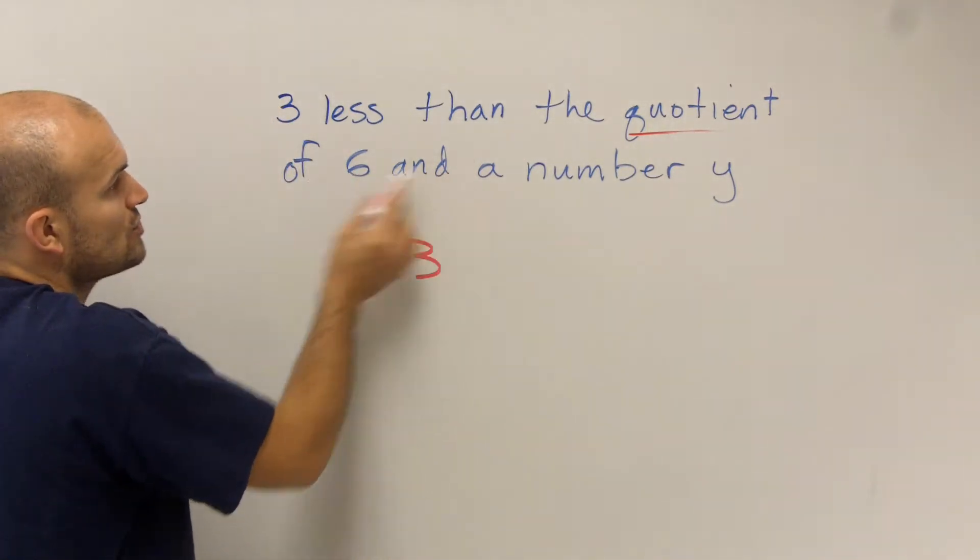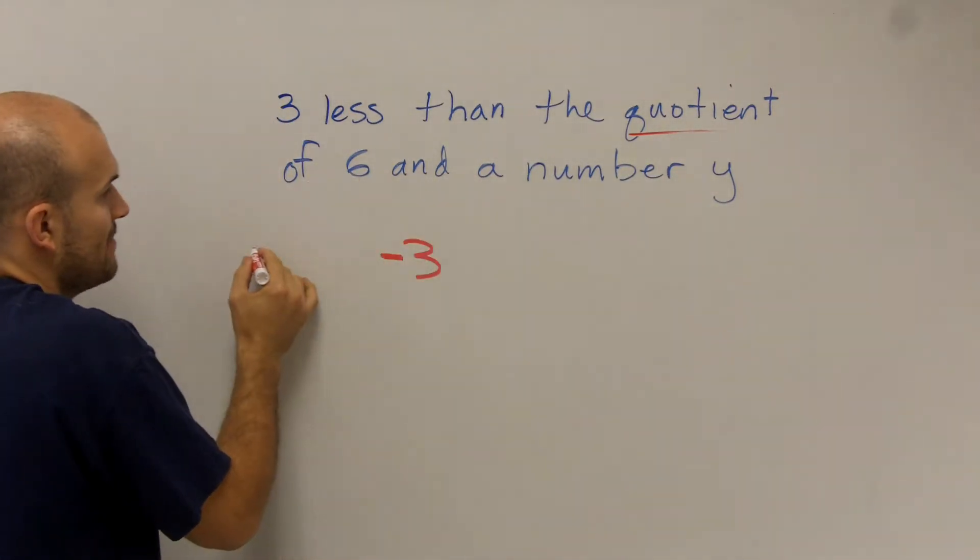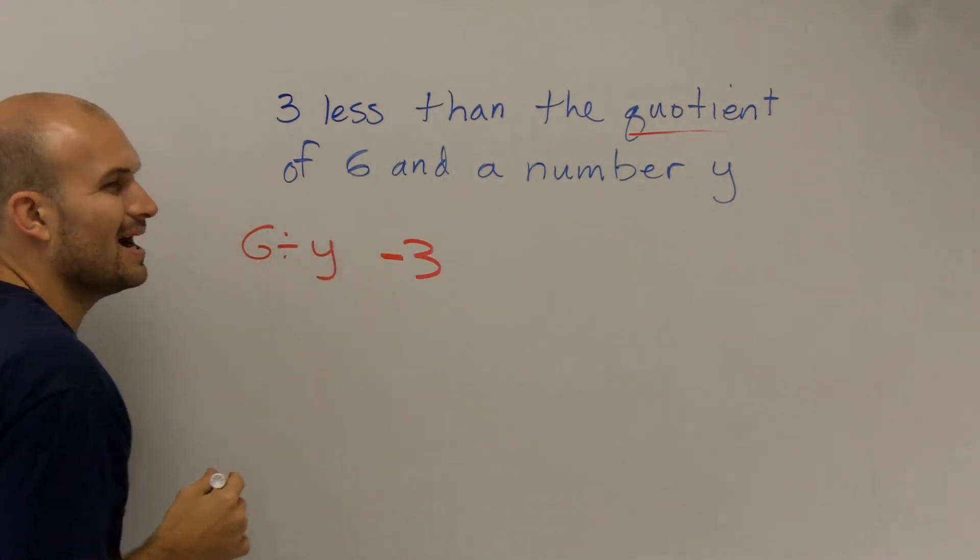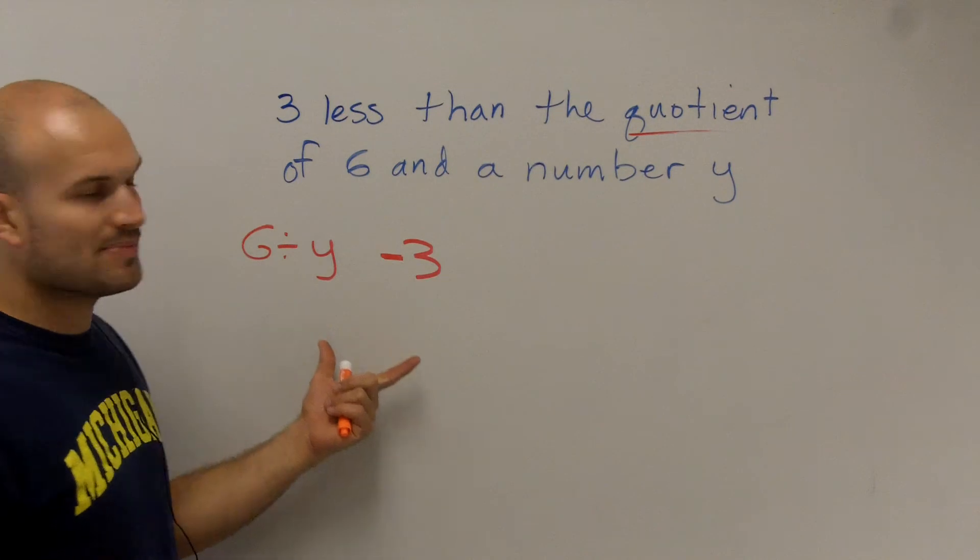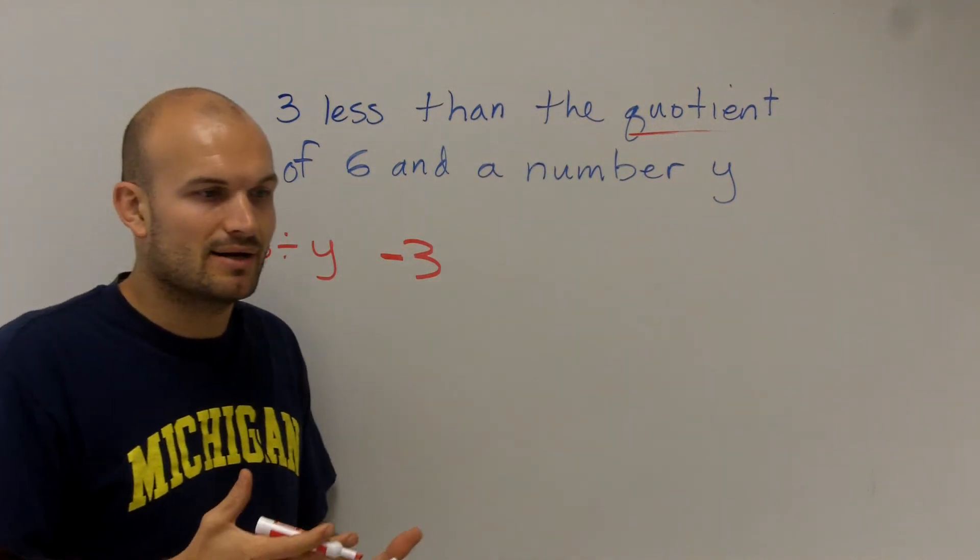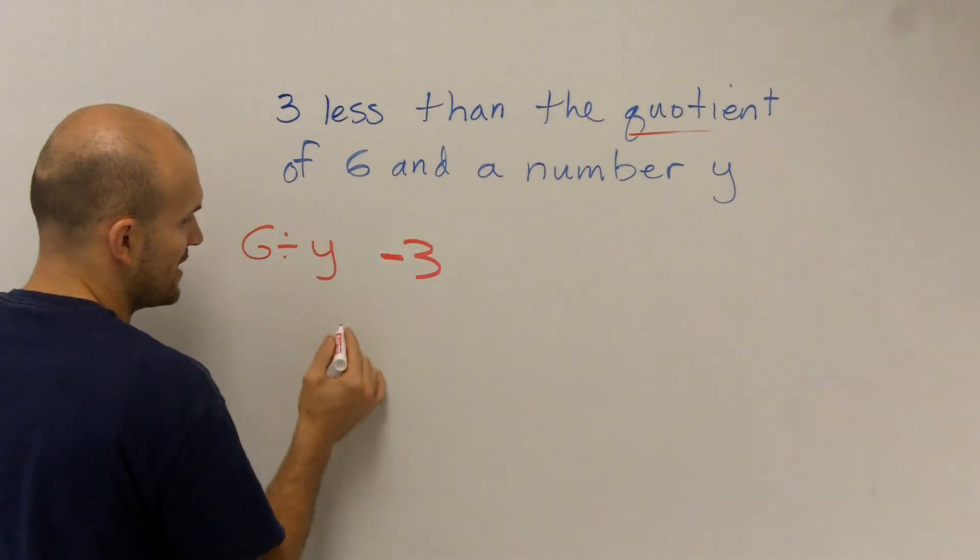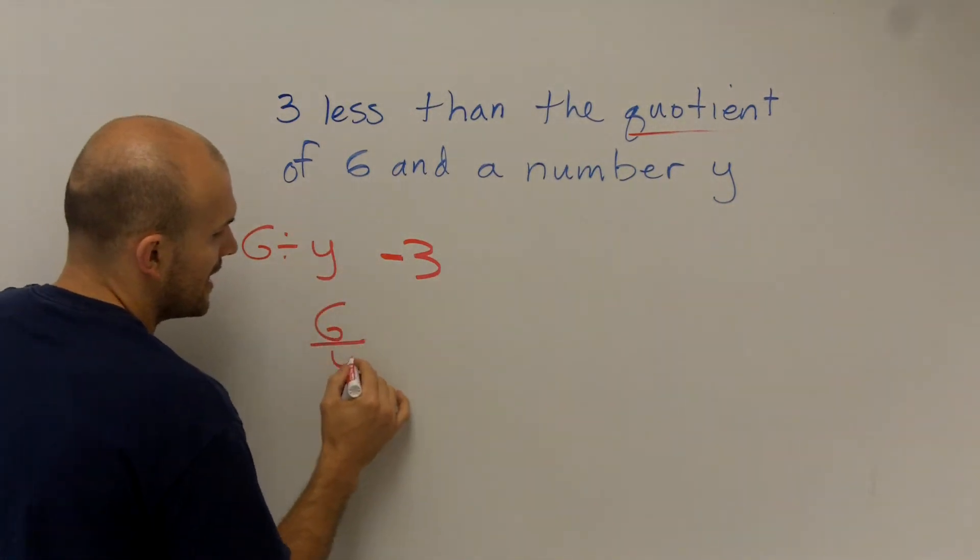So I'm going to write the quotient of six and a number. So that means six divided by a number y. Now, in mathematics, this might be OK, but for the rest of this course, I want you to get used to writing your division as a fraction,